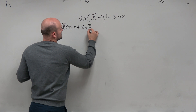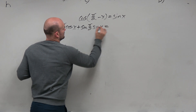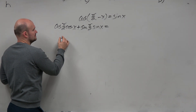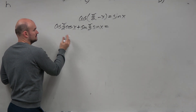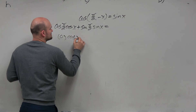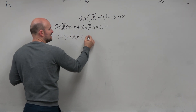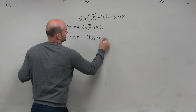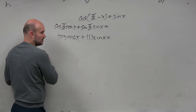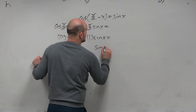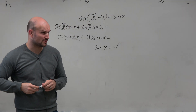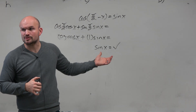By using that formula, I'll have cosine of pi halves times cosine of x, plus sine of pi halves times sine of x. Cosine of pi halves is zero, so that gives us zero times cosine of x, plus sine of pi halves is 1, times sine of x. Zero times cosine is zero, and 1 times sine is sine of x. So those formulas do work, and that co-function identity is true.